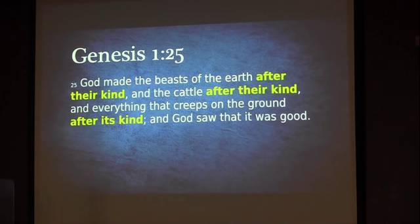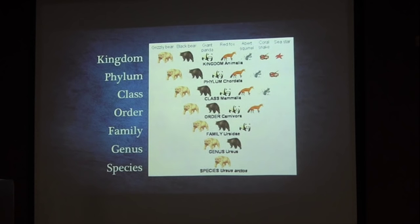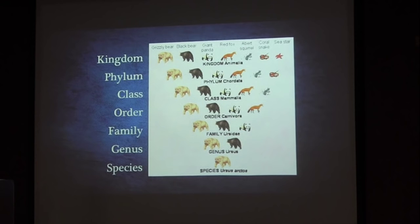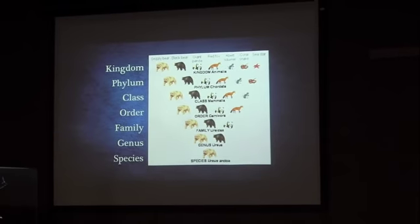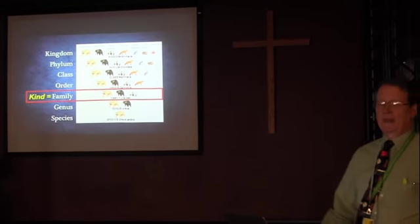God created different plants and animals to reproduce after their kind. Here is the taxonomic classification system used in biology: Kingdom, Phylum, Class, Order, Family, Genus, Species. What was the name of Charles Darwin's famous book? The Origin of Species. Darwin argued that species change — he argued against the view that species had never changed from when God made them. That wasn't what Bible-believing Christians believed. But we have good reasons to think now, from studying living creatures, that the created kind in Genesis is not equivalent to the modern classification of species but is equivalent to the family level in most cases.